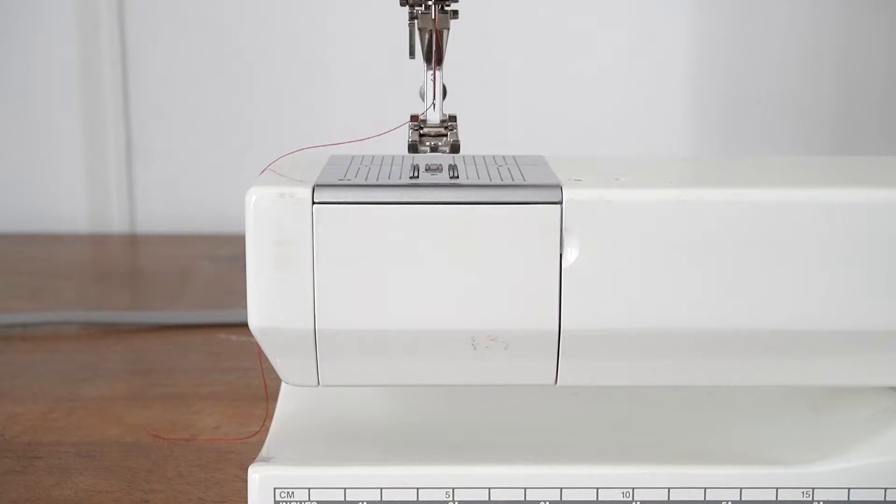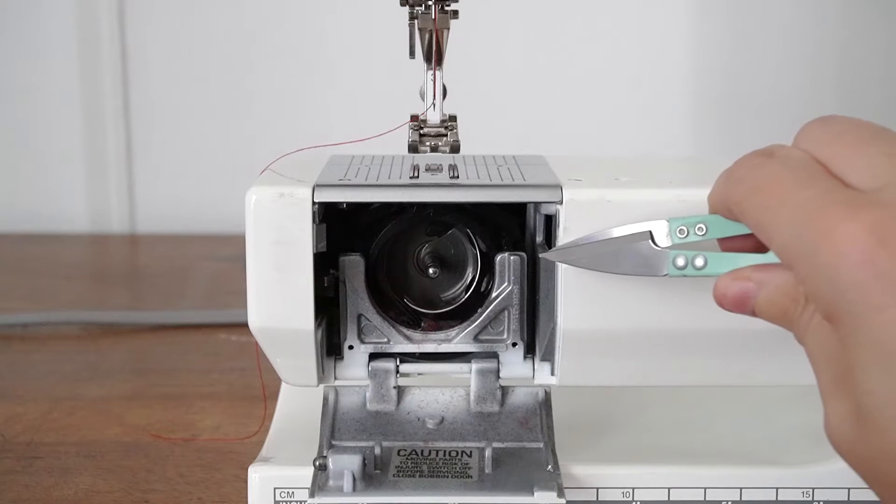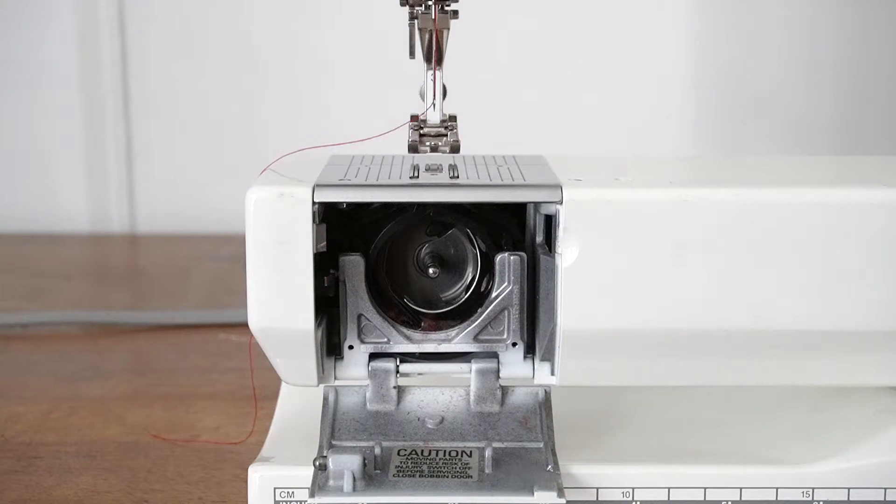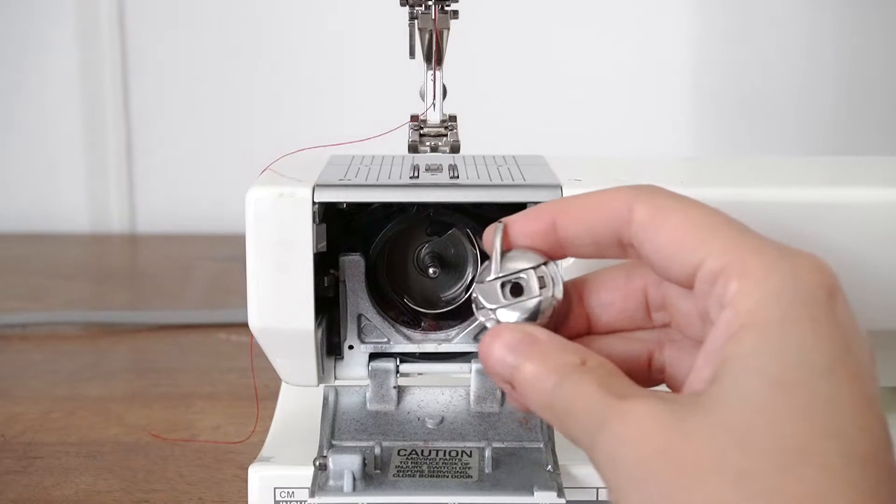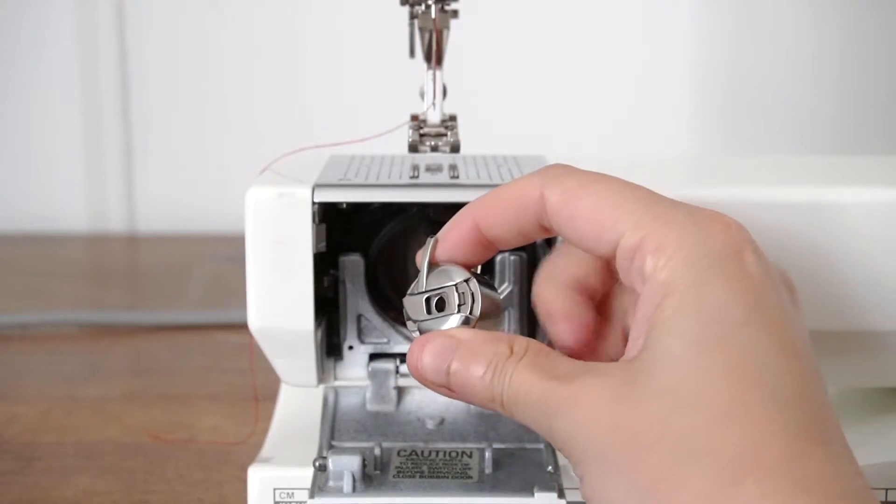Next we need to thread the bobbin through the bobbin chamber. So first we need to open the front door of the bobbin chamber. You could do this if you have nails right here, but I do not have nails, so I'll just have to use a little pair of scissors to prop that open. Now my bobbin holder casing is currently not in the machine. I'll show you how to take it out and put it back in in just a second.